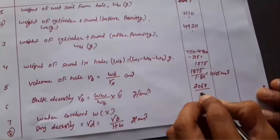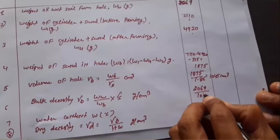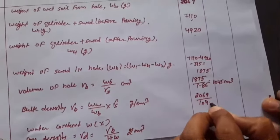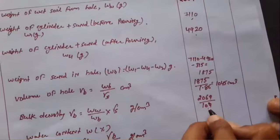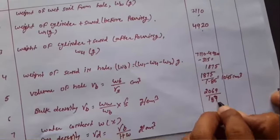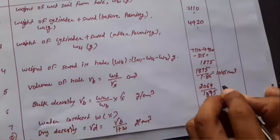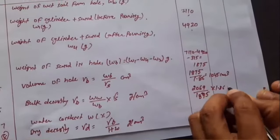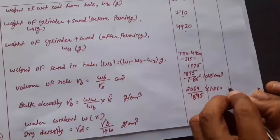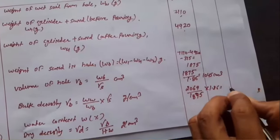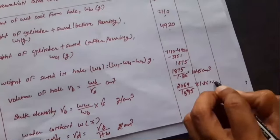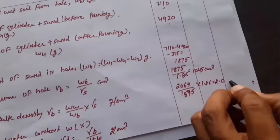Now calculate the bulk density of the soil, which is equal to Ww divided by Wb, multiplied by the density of sand γs — where Ww is the wet weight of soil and Wb is the weight of sand in the hole. This comes out to be approximately 2 grams per cm³.